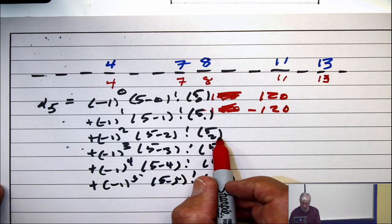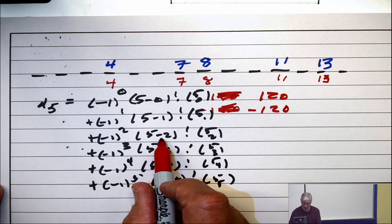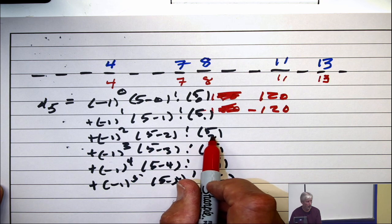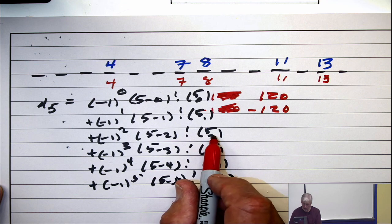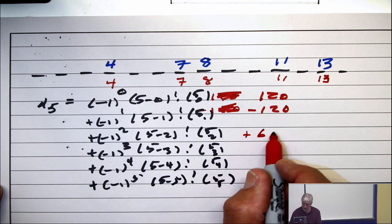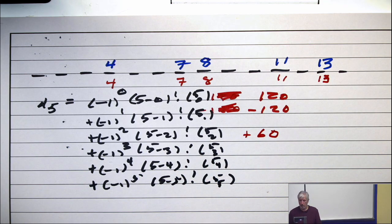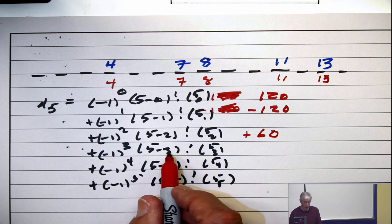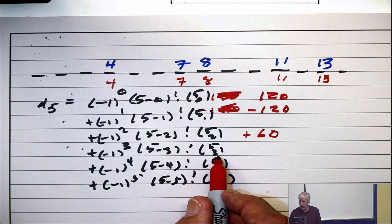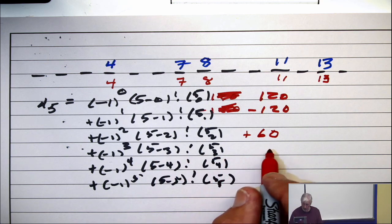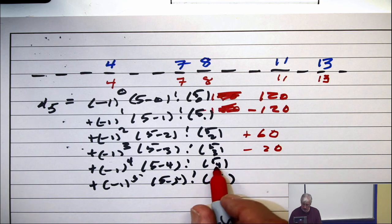This next line is plus, this term is 3 factorial, 3 factorial is 6, this is 5 choose 2, which is 10, so 10 times 6, this next term is 60. What's this term? 2 factorial is 2, 5 choose 3 is also 10, so this term is minus 20, you're saying?